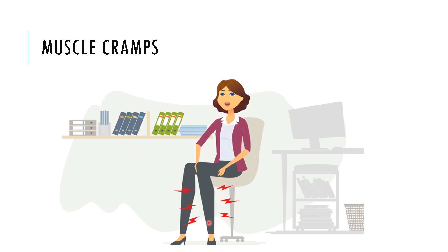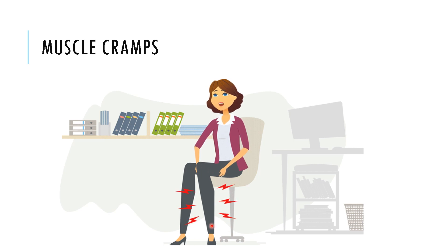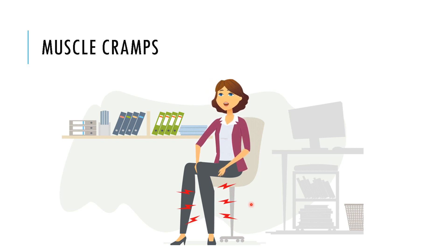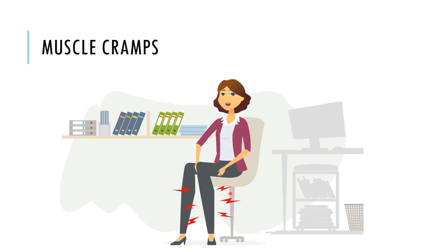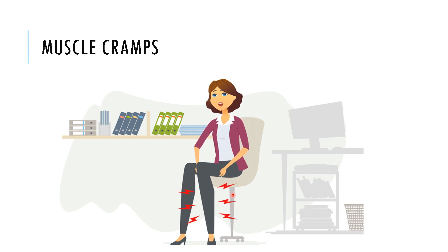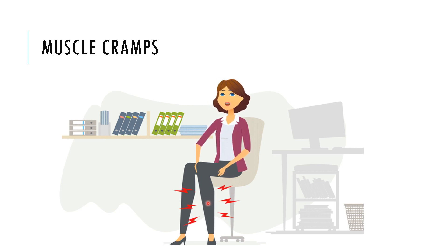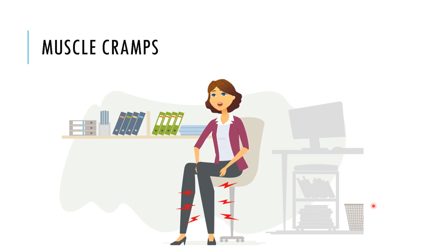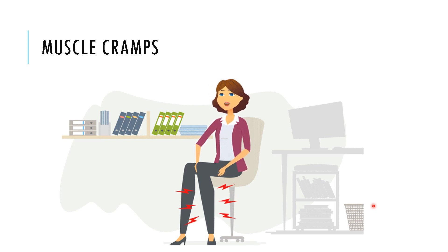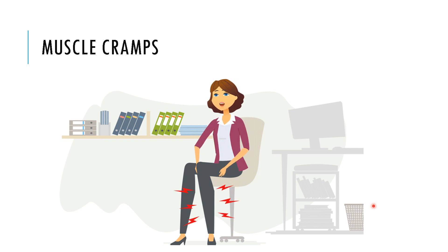People working excessive hours in a sitting position may face muscle cramps around their legs. Even in old age, if movements are restricted, a person might face muscle cramps. Muscle cramps are sudden, involuntary, and can last from seconds to minutes. There is generally a contraction of the muscle which causes severe pain and temporary incapacity to walk. Muscle soreness remains for a while once the cramp has ceased, and cramps are more likely in tired muscles, especially at night.